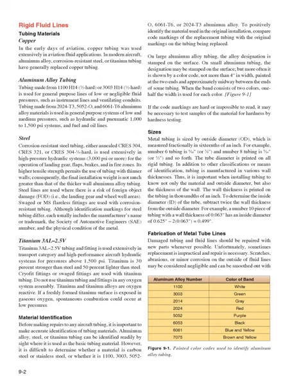To determine the inside diameter (ID) of the tube, subtract twice the wall thickness from the outside diameter. For example, a number 10 piece of tubing with a wall thickness of 0.063 inches has an inside diameter of 0.625 inches minus 0.063 inches, equals 0.499 inches.